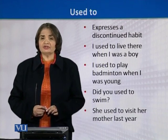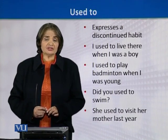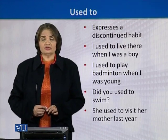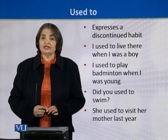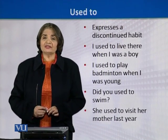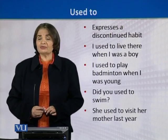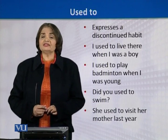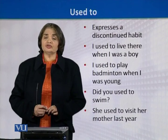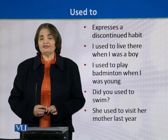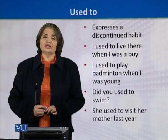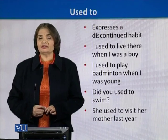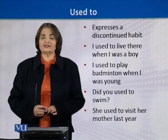Now the situation is different. It is being mentioned about a habit which discontinued — which was there in the past, but now it is not there. With the help of the auxiliary verb, it is important that we are able to express the time frame: when was it happening? It was happening some time ago and now it has been discontinued. The auxiliary 'used to' is used to express that something was happening in the past which is not continuing anymore as a habit. Thank you.